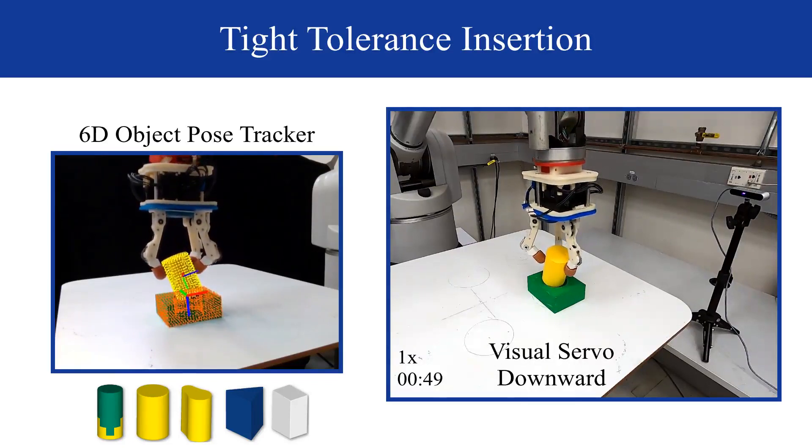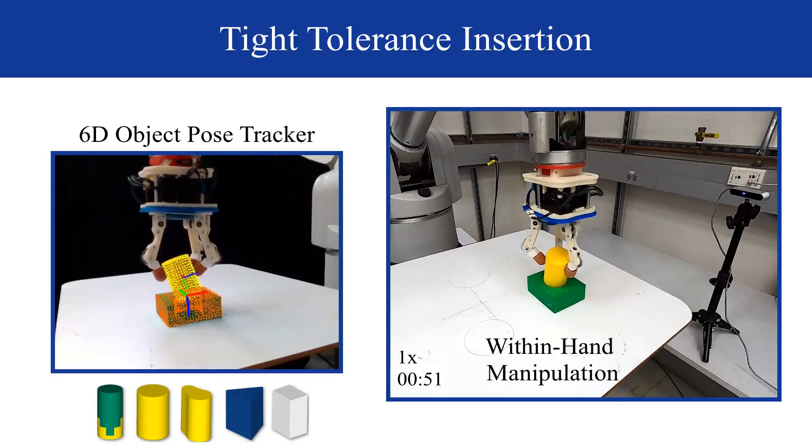And third, incorporate vision feedback into the control loop to aid in insertion, as this feedback will be key to precisely controlling our compliance system.